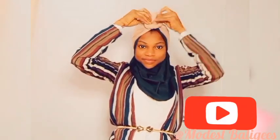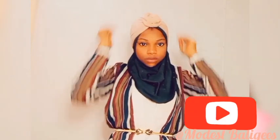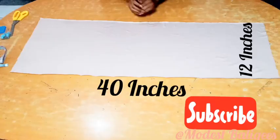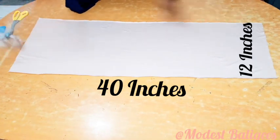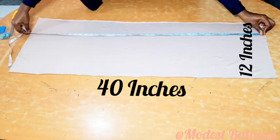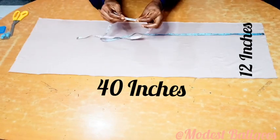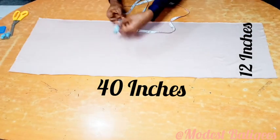For this turban we need fabric of 40 inches length and 12 inches wide. So we need fabric that is about 40 inches long and 12 inches wide. I have my fabric already.